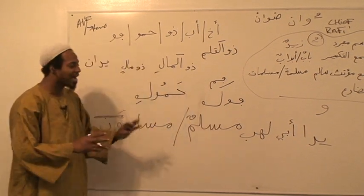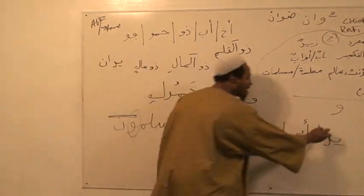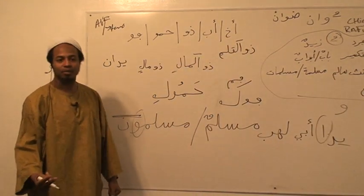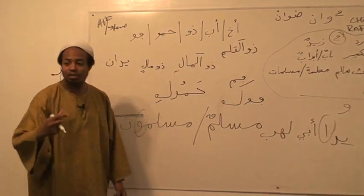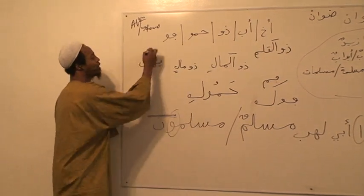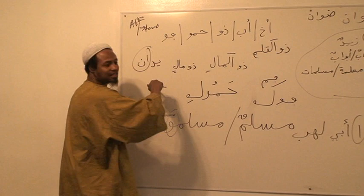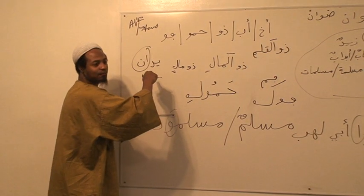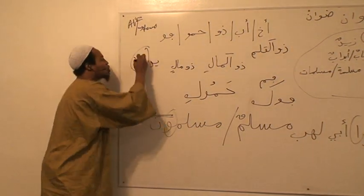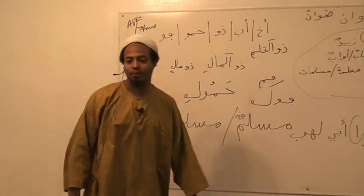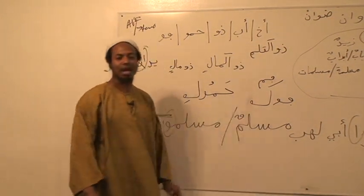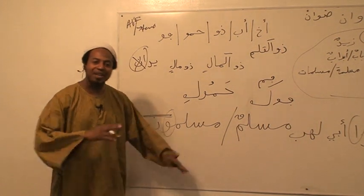So this is what we have to start to understand. Whenever you have that alif, that alif represents ithnan. And actually, the alif and noon together represent the raf'i case of ithnan. Because when the noon is gone, it's no longer in the raf'i — there's something happening.